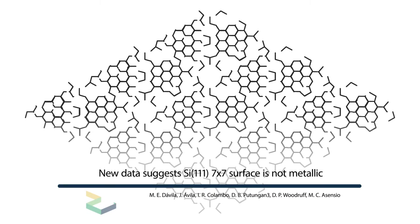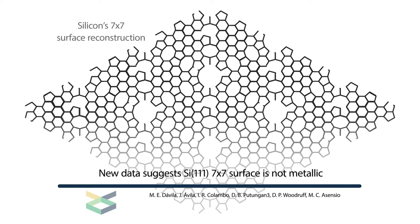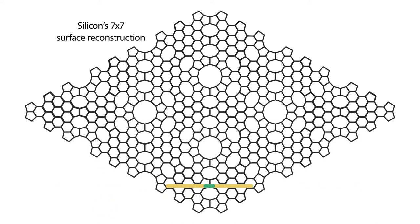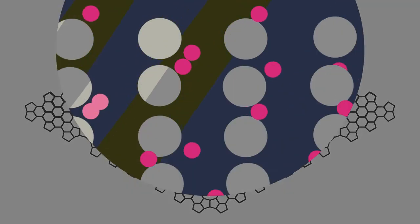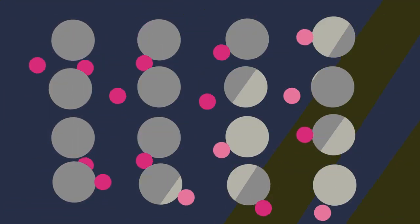It took scientists more than 25 years to work out the structure of silicon's 7x7 surface reconstruction. Since reaching that milestone, experimental and theoretical studies have supported that this reconstruction produces a conductive, metallic surface.